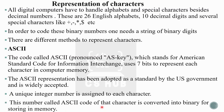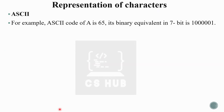This number, called the ASCII code of that character, is converted into binary for storing in memory. For example, the ASCII code of capital 'A' is 65. For small letter 'a' it is different — for capital 'A' it is 65, and its binary equivalent in seven bits is 1000001. When we press capital 'A', this code — one '1' followed by five '0's and a '1' — is stored in memory. 65 is the ASCII code of capital 'A'.